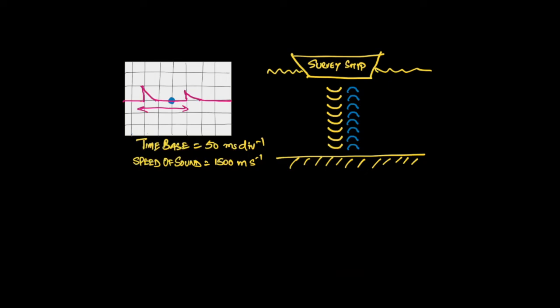Let's have a look at an example. In this example we have a survey ship that's sending down a sound pulse down to the seabed to measure how deep the ocean is at this point. We see two pulses come through: the original one being when the sound pulse was sent and the second one being when it returned back to the ship. In this example we've set the time base of the oscilloscope to 50 milliseconds per division and we also know that the speed of sound in water is 1500 meters per second.